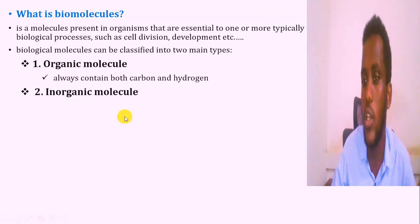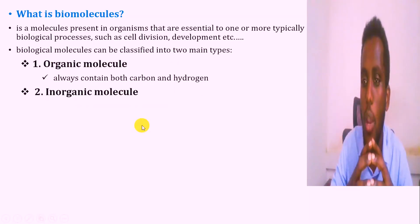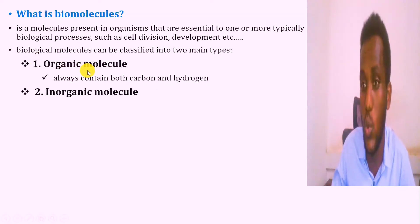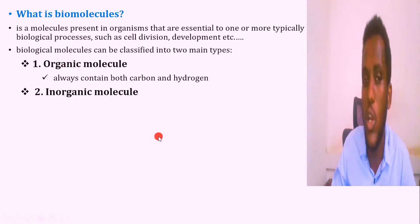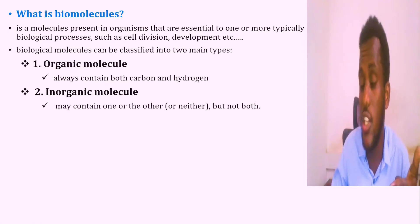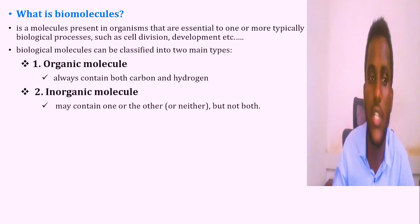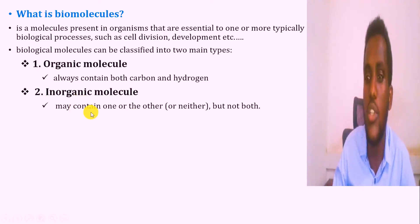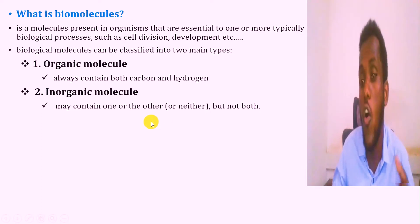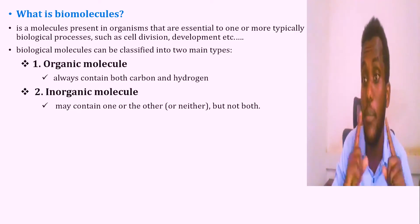Organic molecules are molecules that consist of carbon and hydrogen in their chemical formula structure. Inorganic molecules are molecules that may lack carbon or hydrogen, or maybe none of them.